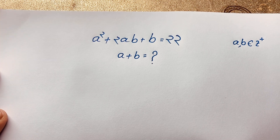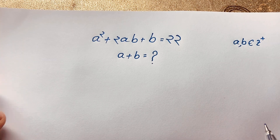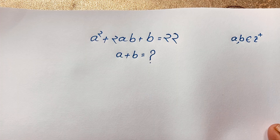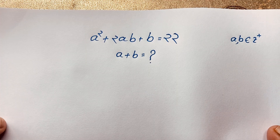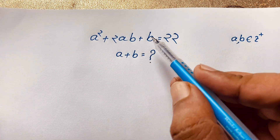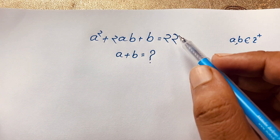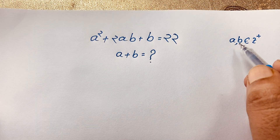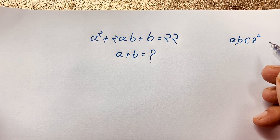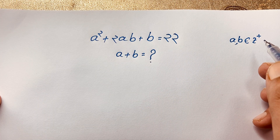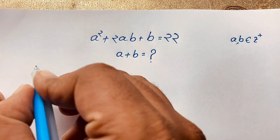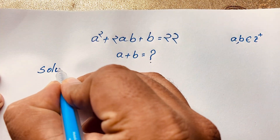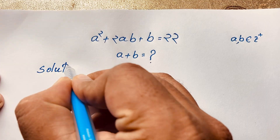Hello everyone, welcome to Russia's classroom. Today we have solved an interesting math problem: a squared plus 2ab plus b is equal to 22, and a plus b is equal to what? Here a and b are positive integers. How to solve this interesting math olympiad question? I will solve this question using an easy method, step by step.